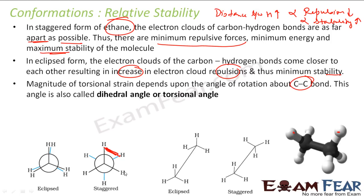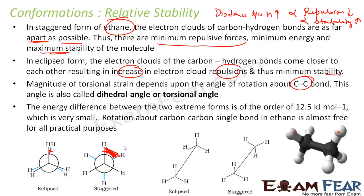This angle of rotation is called the dihedral angle or torsional angle. The magnitude of strain depends on this angle: when the angle is less, the strain is more; when the angle is more, the strain is less. The energy difference between the two extremes — eclipsed and staggered — is only 12.5 kilojoules per mole, which is very, very small. Thus, rotation about the carbon-carbon single bond is almost free.